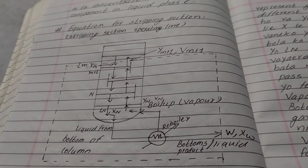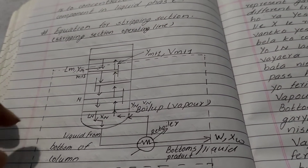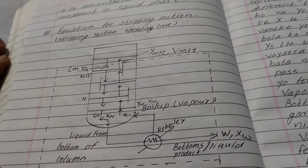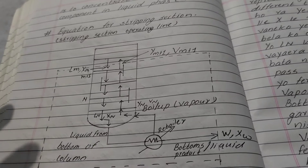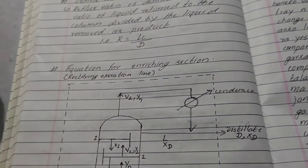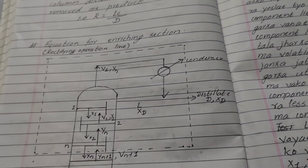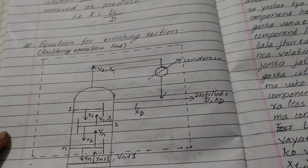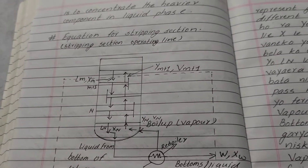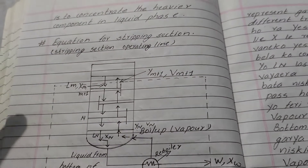This video covers the equation for the Stripping Section of a distillation column. This is the distillation column mechanism we have made in the video. This is the sub-mechanism and its description. The first part is the description — now this is the Stripping Section.